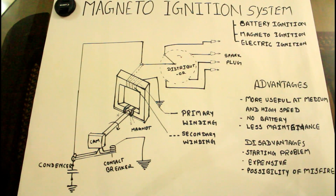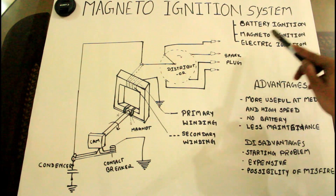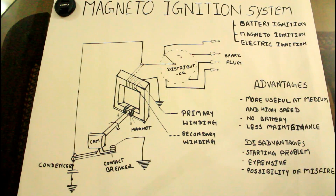Hello guys and welcome back to our channel RJ Automobile, a YouTube channel where we discuss each and every part of an automobile. Today we are going to discuss the magneto ignition system, as many of our viewers want to learn about it. The ignition system is basically used for sparking inside an engine cylinder and has three types: battery ignition system, magneto ignition system, and electric ignition system. We have already discussed the battery ignition system, so today we focus on the magneto ignition system.